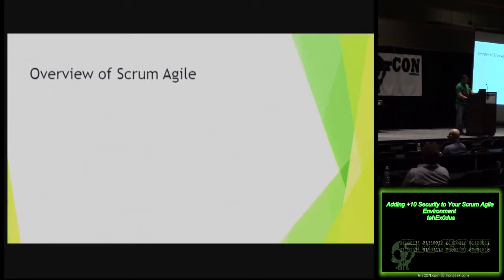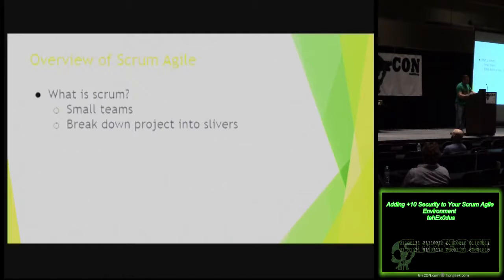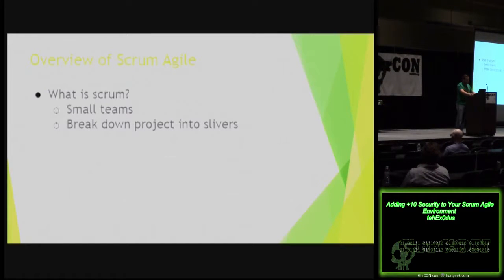Here's a 10,000-foot overview of what Scrum is. Scrum is basically using small teams to break a large project into small, manageable, short goals — tiny slivers of a project. Using one to three weeks of time, teams can see their progress on a large project as they complete tasks. Teams can identify areas of improvement, look at positive outcomes, and see things that they've done well at the end of each sprint.